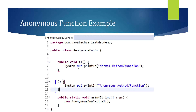Let me show you an example. This m1 is our normal traditional method, and this is the anonymous method. If you observe, this doesn't have any method name or prefix. Now, for the traditional method on line 16, we can call m1 because we know the method name, return type, and modifier. But we can't call the anonymous function the same way since we don't know anything about its name or prefix.